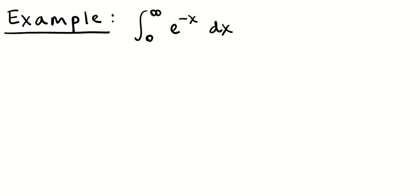Here's another one to try: the integral from 0 to infinity of e to the negative x dx. The 0 is not a troublesome spot here — e to the negative 0 is still 1. The issue is the infinity. Try to anti-differentiate this yourself, transform it to a limit, and see whether it's infinite or finite. Then check your answer against mine, which will pop up in 5 to 10 seconds.